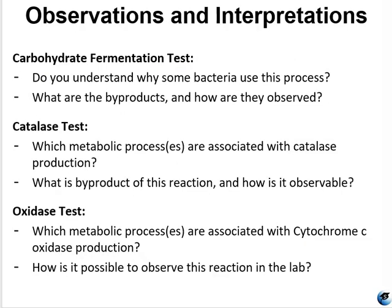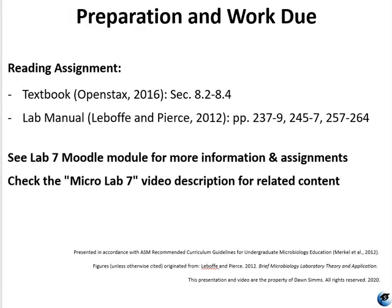For your observations across these tests, make sure you understand why some bacteria use fermentation to make energy, what the byproducts of fermentation are, and how they are observed. For the catalase test, consider which metabolic processes are associated with catalase production, what the byproduct of this reaction is, and how it is observable. For the oxidase test, consider which metabolic processes are associated with cytochrome C oxidase and how it is possible to observe cytochrome C oxidase production in the lab. Thank you for watching — don't forget to do the reading, check the description for more videos on these topics, and leave your questions in the comments below.